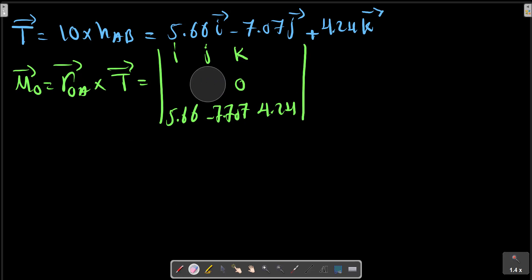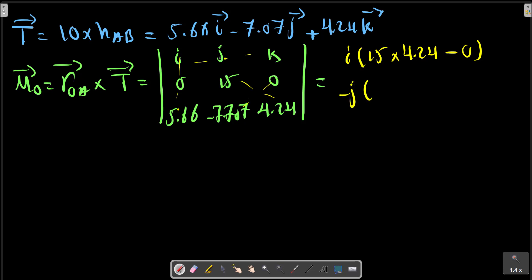Setting up the determinant: I, J, K with the cross product components. Zero minus zero for I, and K times zero minus 50. After simplification, MO can be obtained.